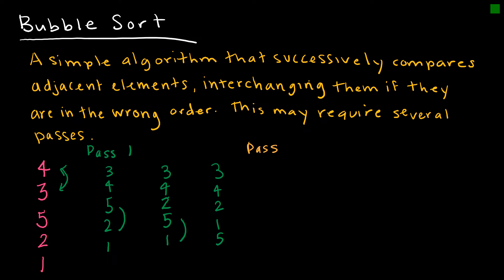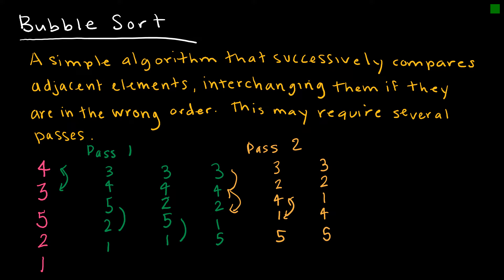In pass two, I start at the top again. Three and four are in the right order. Four and two are not, so they switch. Then I look at four and one — those are not in the right order, giving me 3, 2, 1, 4, 5. Then four and five are in the right order.